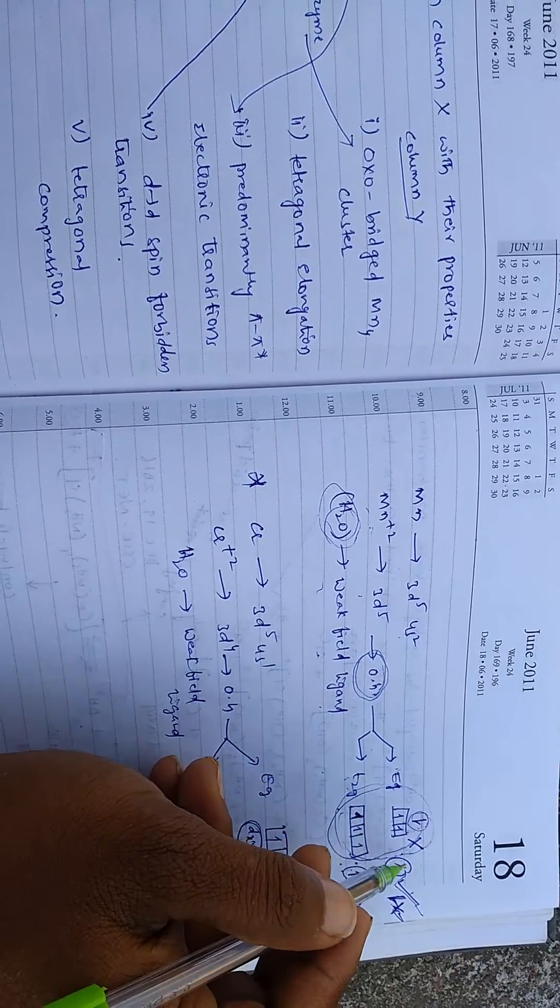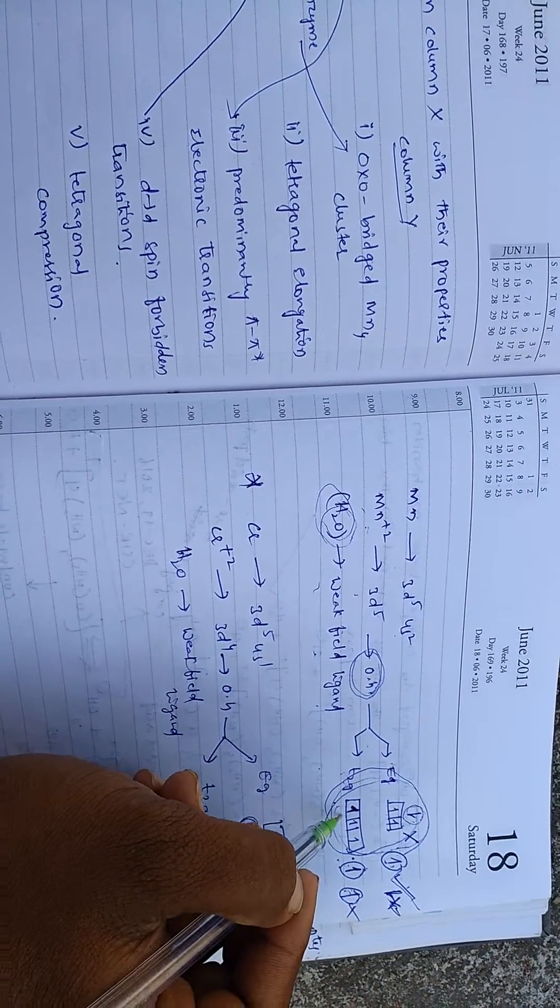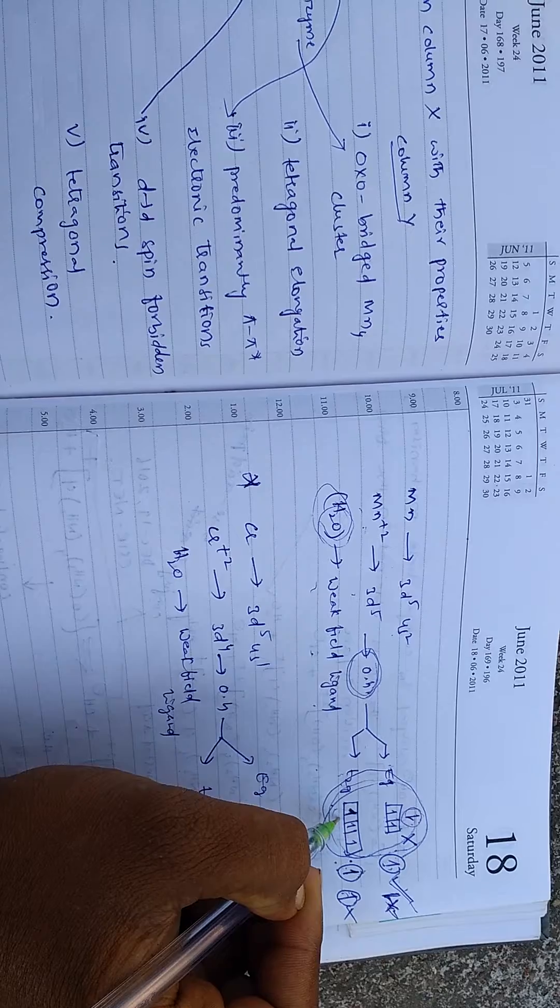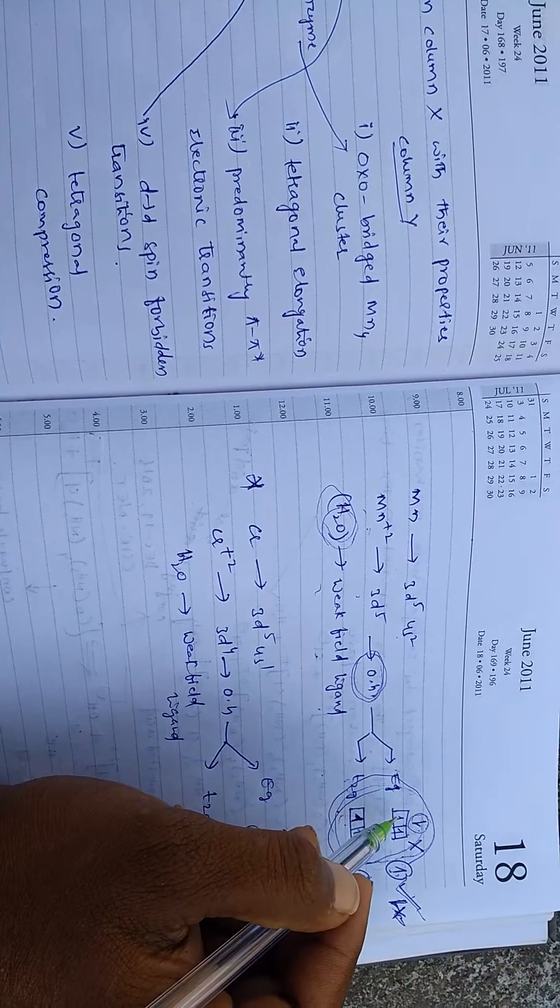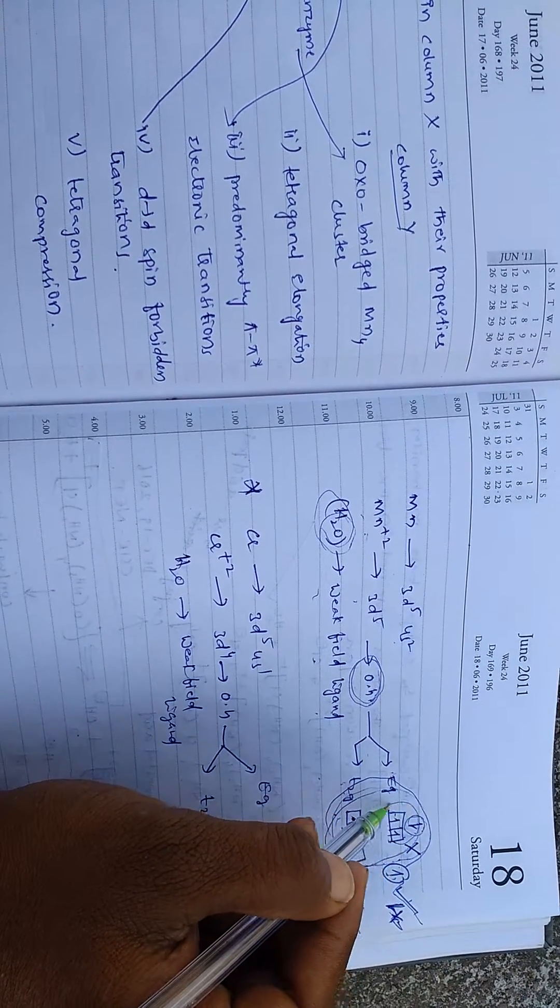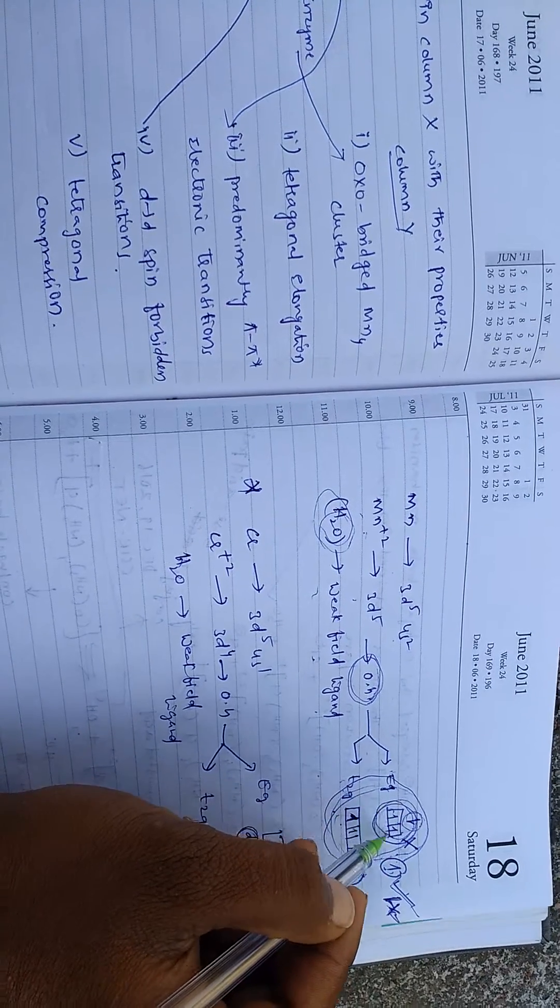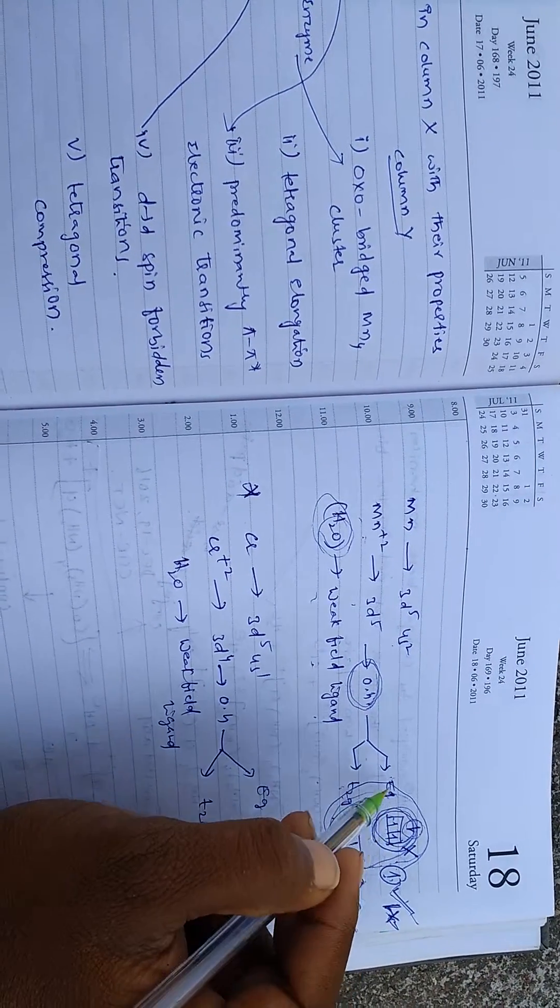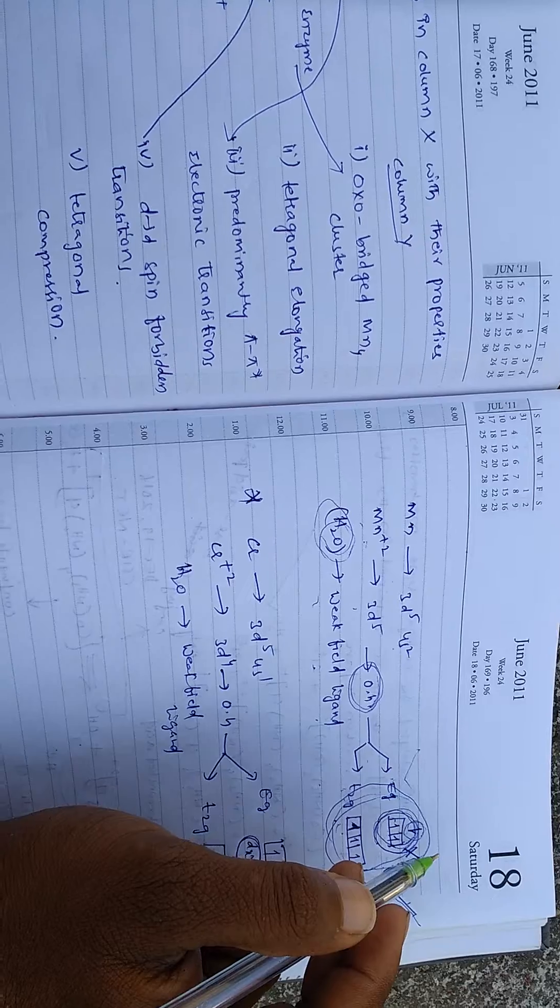So in this complex, there is no chance for spin allowed transition, because the electron should change in the higher excited state energy level. Hence, this is spin forbidden.